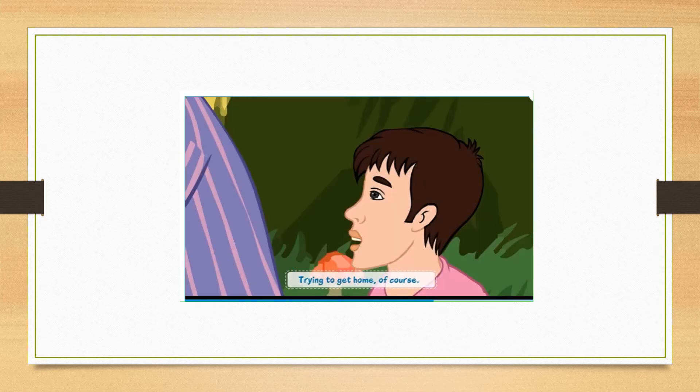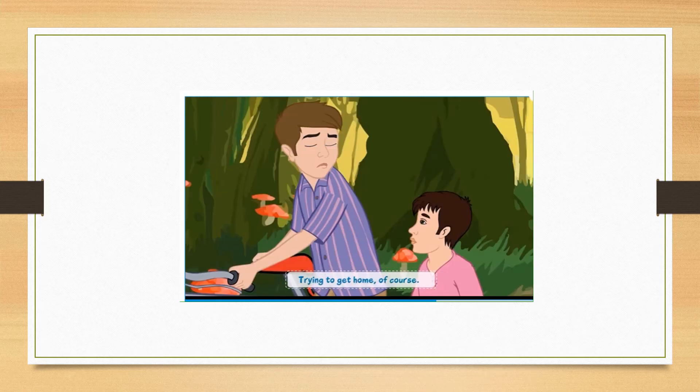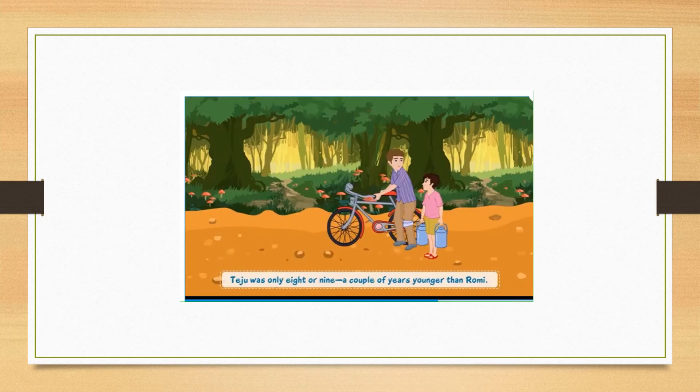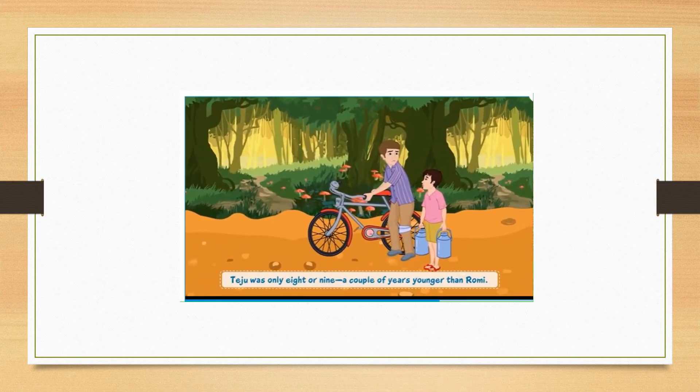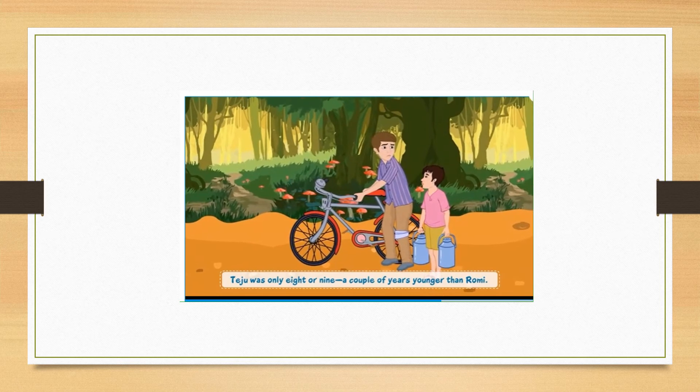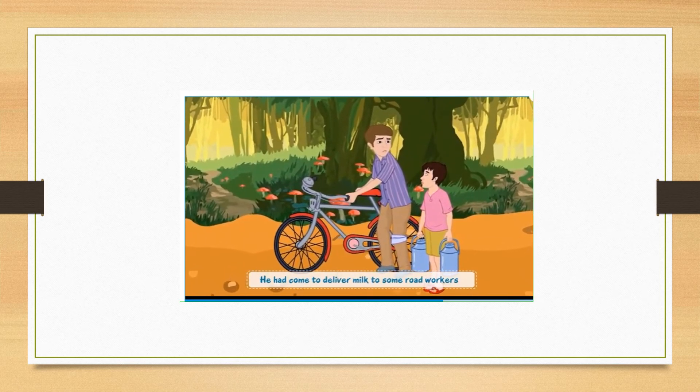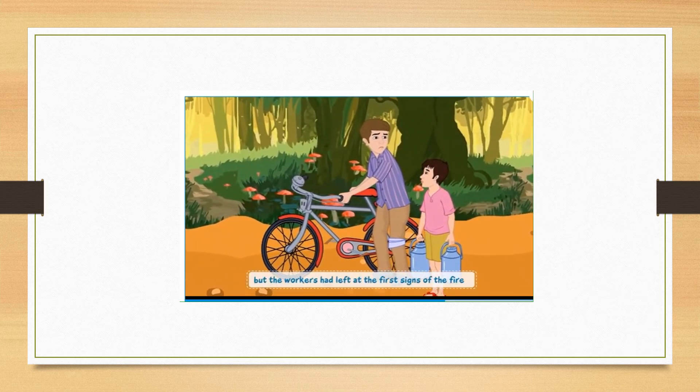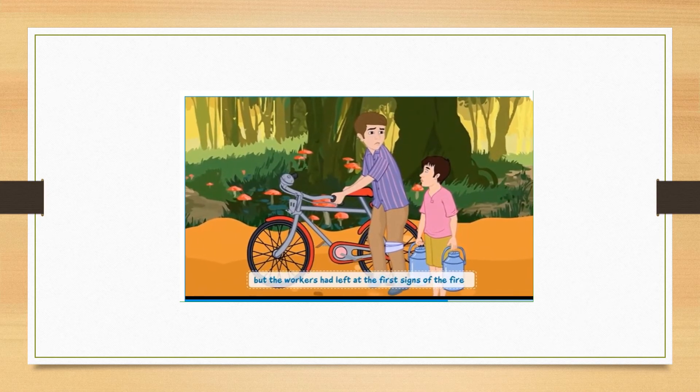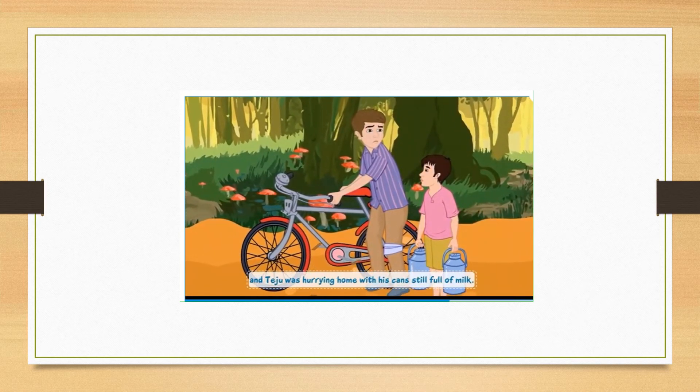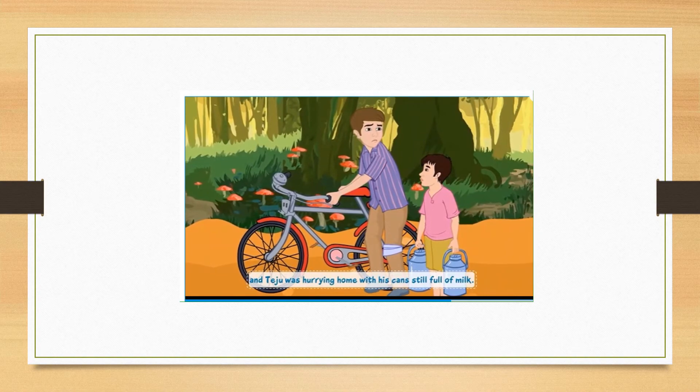Teju, trying to get home, of course. Romy, jump on. Teju was only eight or nine, a couple of years younger than Romy. He had come to deliver milk to some road workers, but the workers had left at the first signs of the fire. And Teju was hurrying home with his cans, still full of milk.